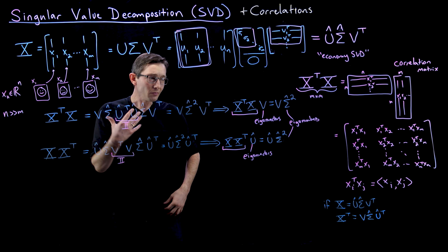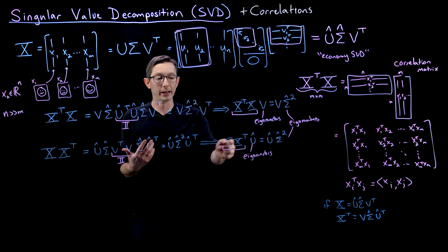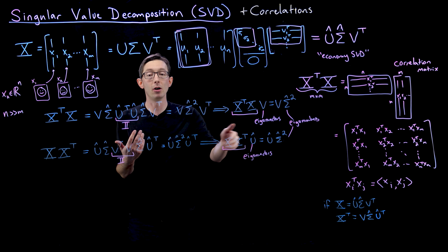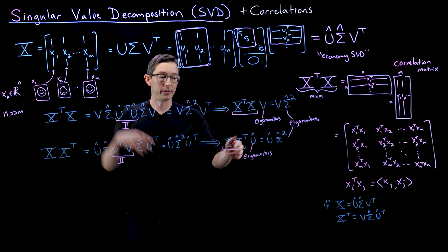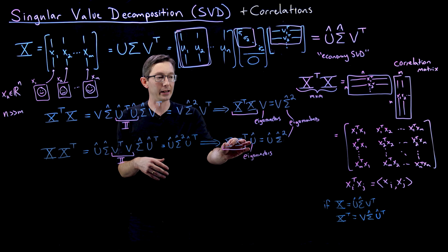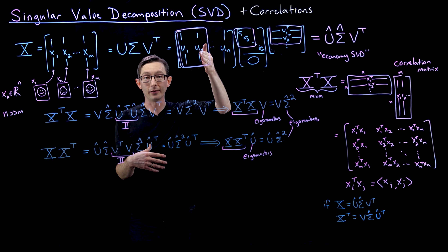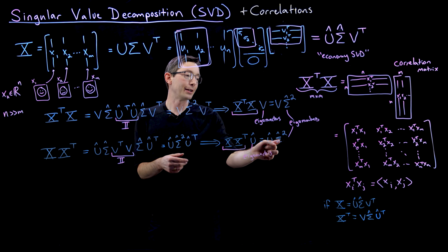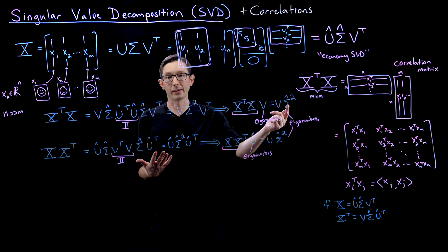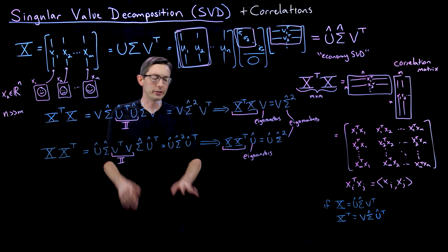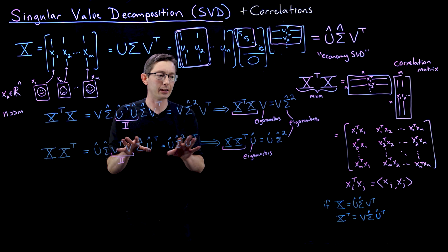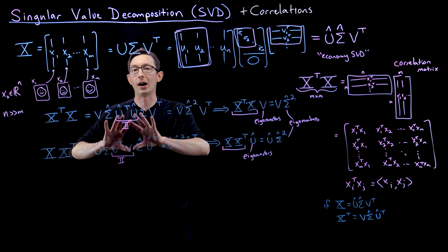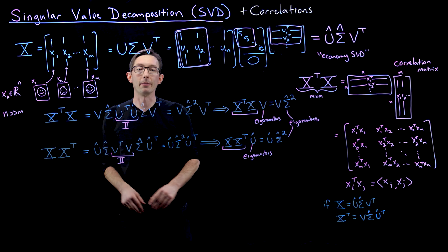The columns of U are eigenvectors of one correlation matrix, and the columns of V are eigenvectors of another. The first column U1 is the largest eigenvector — most correlated with the column space of the data. The second column is the next most important, and so on. Their importance is quantified by the eigenvalues σ̂². This is a very cool interpretation — it's not how you compute the SVD, but it's how I interpret the SVD.